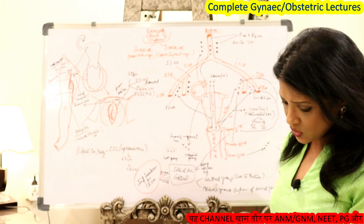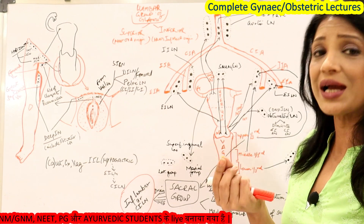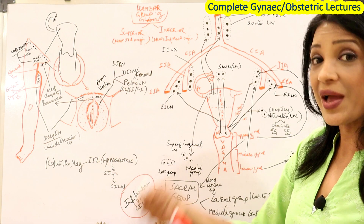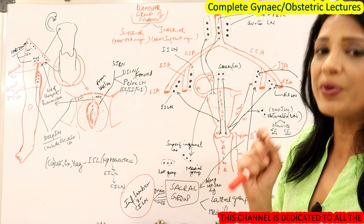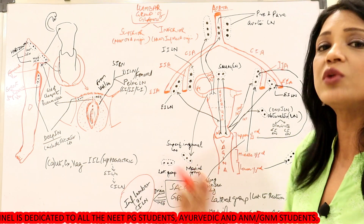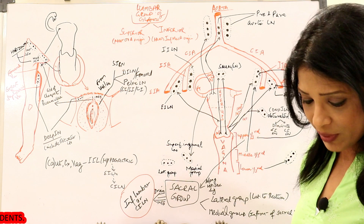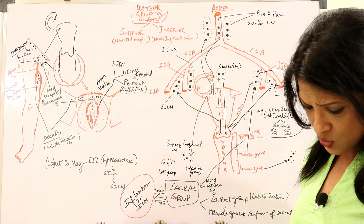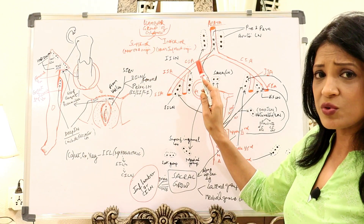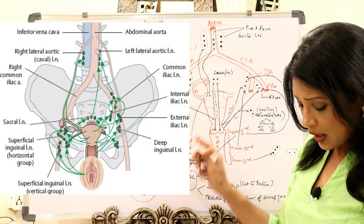The superficial inguinal lymph nodes, lateral and medial, get inflamed and palpable whenever there is inflammation or abscess in the external genitalia — like a Bartholin's abscess — or any infection of the legs. Inguinal lymph nodes are easily palpable in both females and males. Hypogastric lymph nodes is another name for the internal iliac lymph nodes, because the internal iliac artery is also called the hypogastric artery.